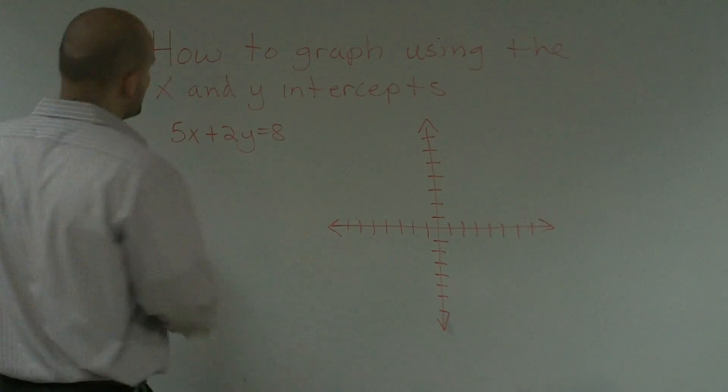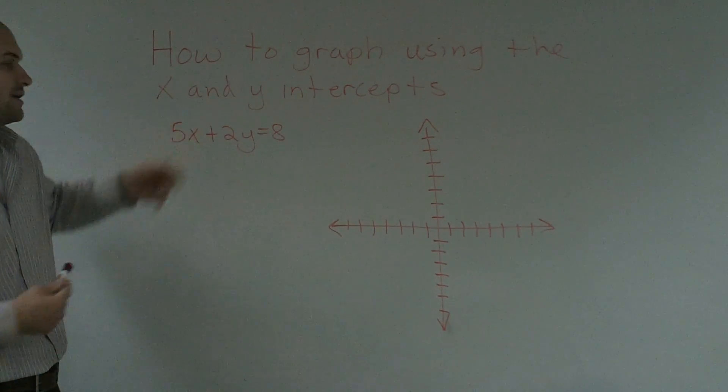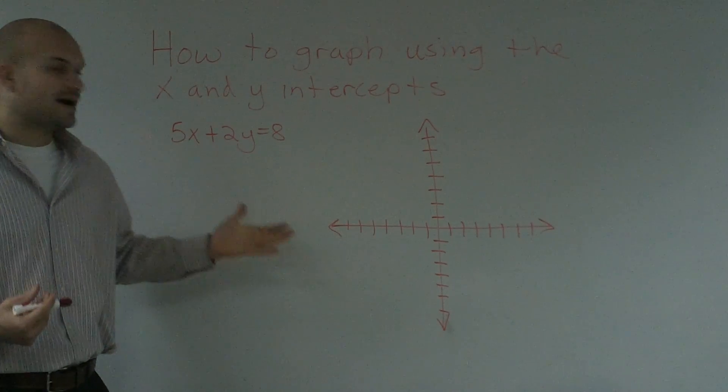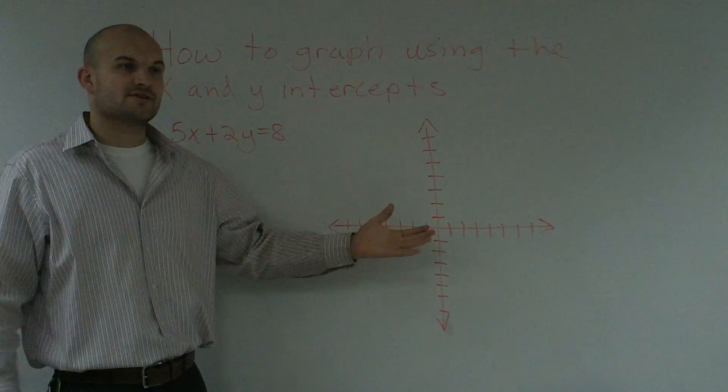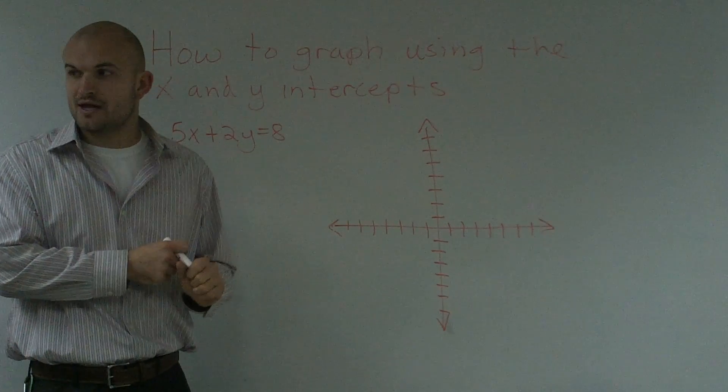So, a quick little review of something we've already done is how to graph using the x and y intercepts. What we're going to do is find out where this graph crosses the x-intercept and where it crosses the y-intercept, and then we're going to go and sketch our line.